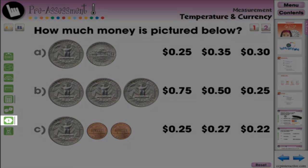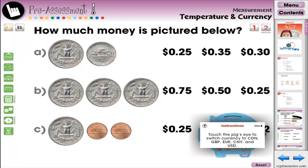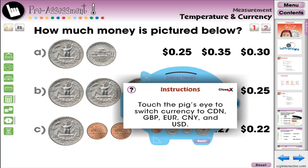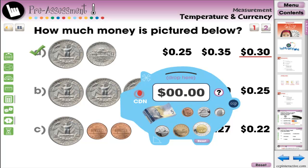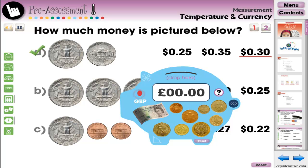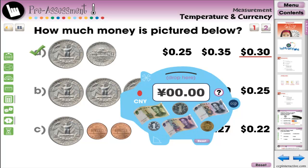The money counter tool is a great tool to understand currency and value. Simply drag the money to the top of the piggy bank to add it up. We provide five different currencies: US dollars, Canadian dollars, British pounds, euros, and Chinese yens.